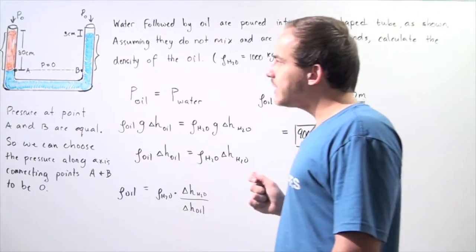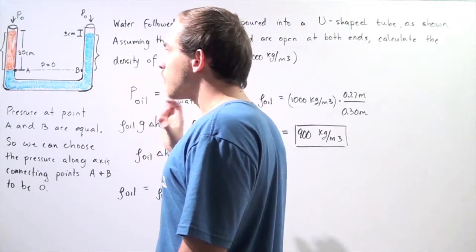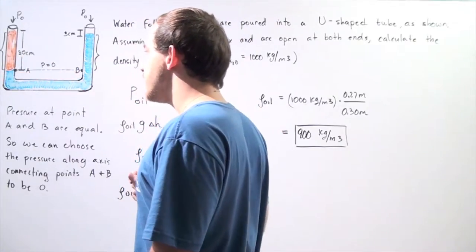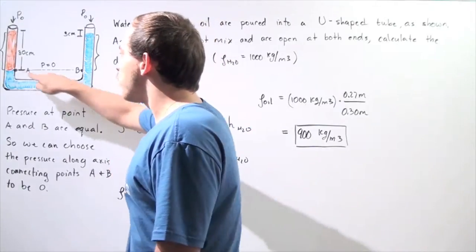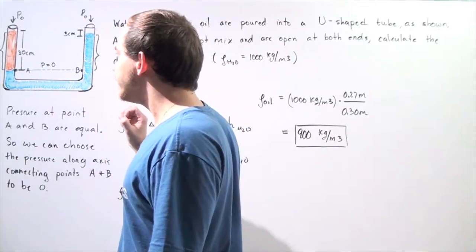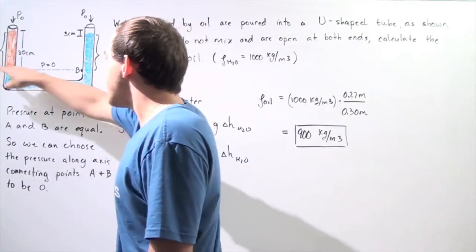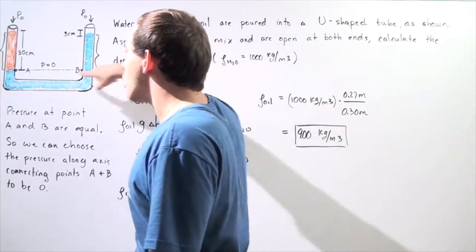Let's begin by noticing that the vertical distance of the oil along the column is 30 centimeters. So let's choose point A to be the point between the oil and the water. And if we draw a horizontal axis along point A, it will pass through some point along this section of the tube, let's call it point B.